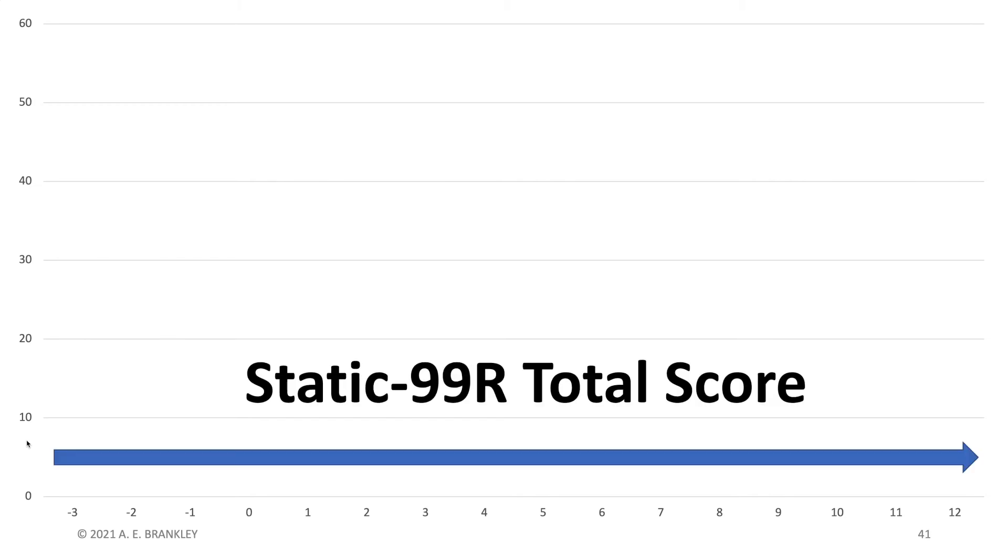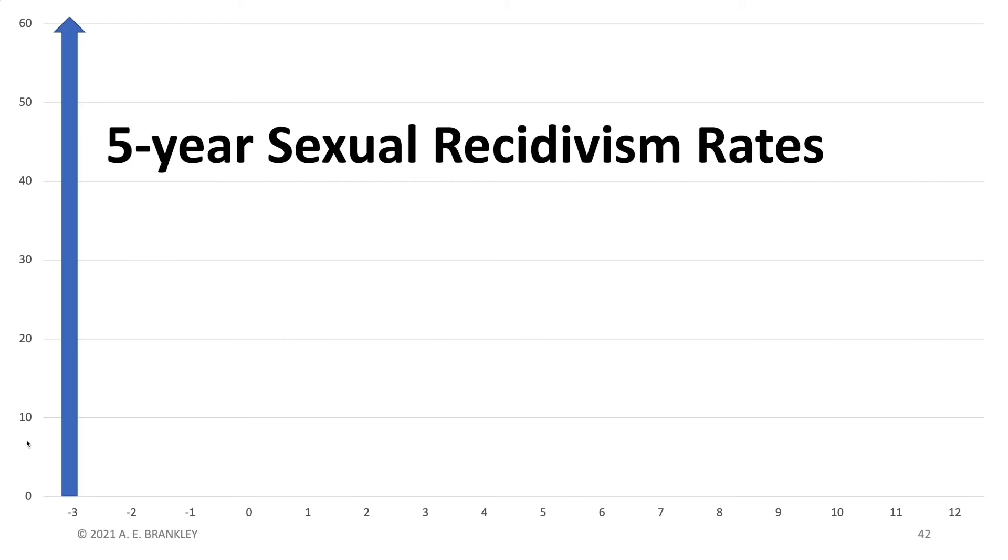Okay, new figure. With this figure, we will look at the new recidivism estimates in the evaluator's workbook. Thankfully, this figure is simpler. On the x-axis, we have static 99R total score. On the y-axis, we have the five-year sexual recidivism rates.